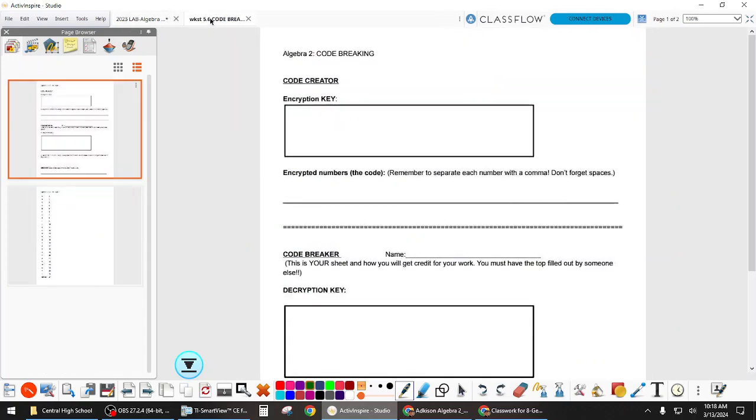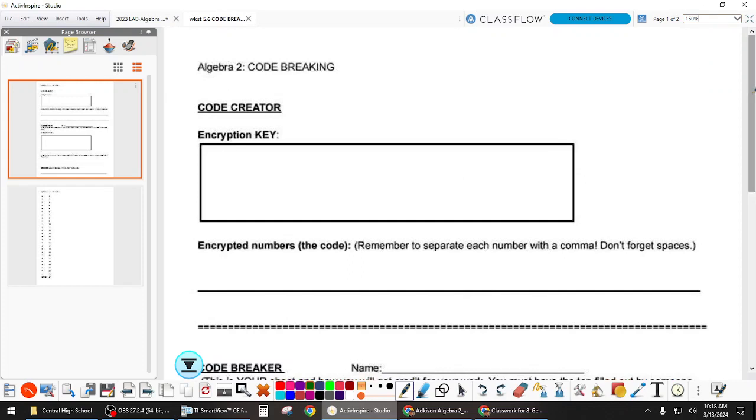You're each going to get a sheet that looks like this one. Your encryption key for us is going to be a function that you get to make up. I want you to make a decently challenging function but not one that nobody can decrypt. The person who gets your sheet will need to be able to decrypt your message using the inverse function. So if you make yours super weird, nobody will be able to do it.